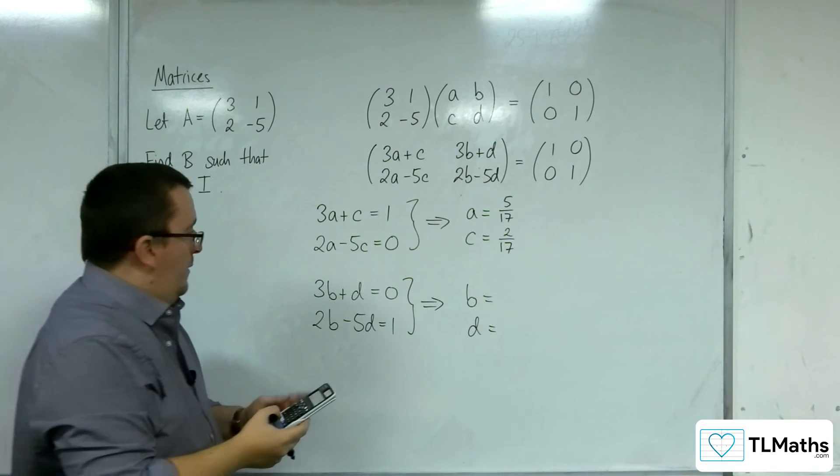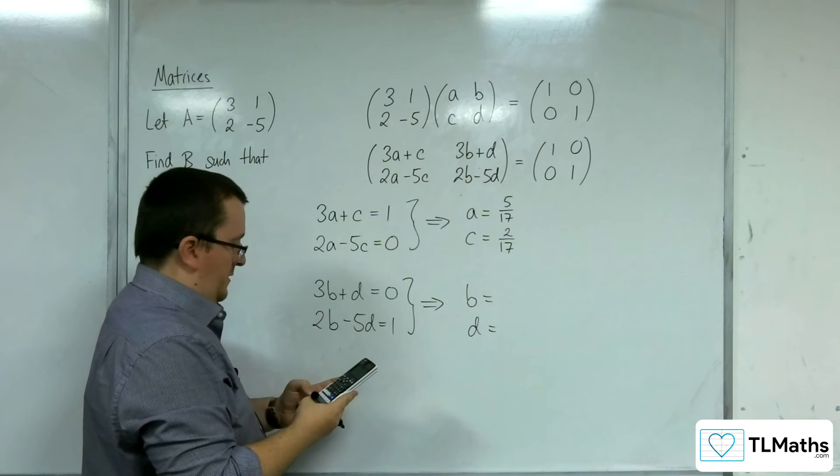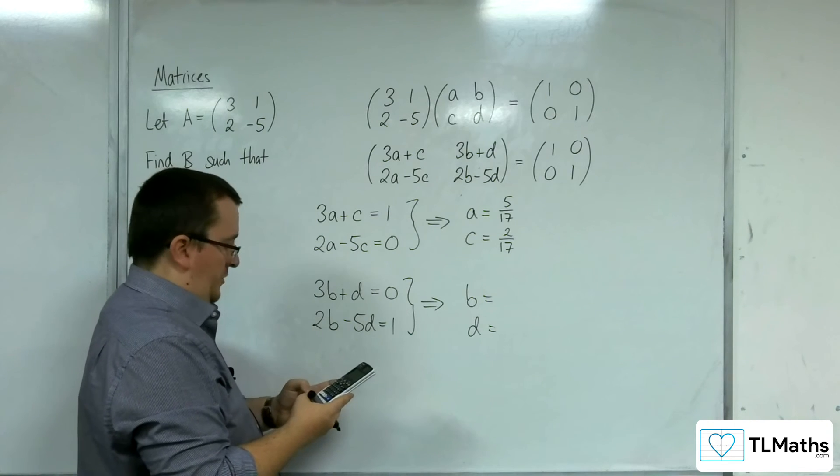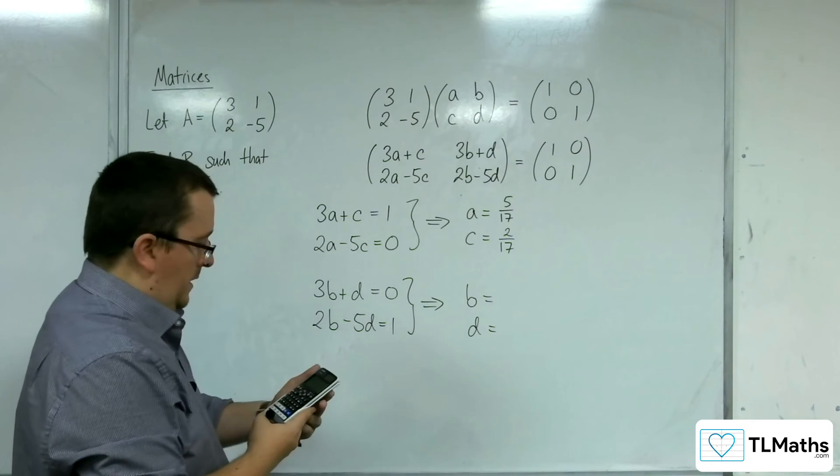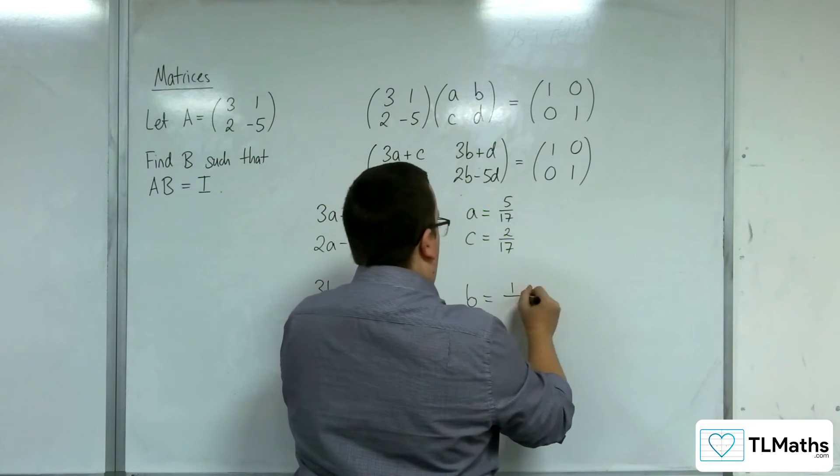So if we go here again, 3, 1, 0, and 2 minus 5, 1. And we get 1 17th for B and minus 3 17ths for D.